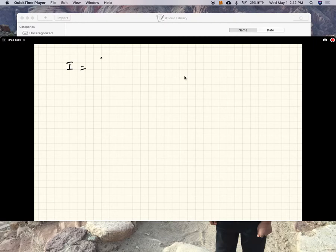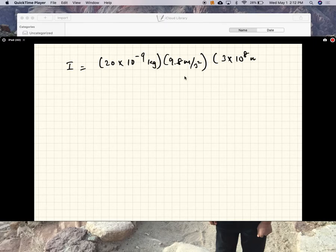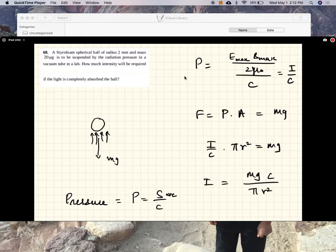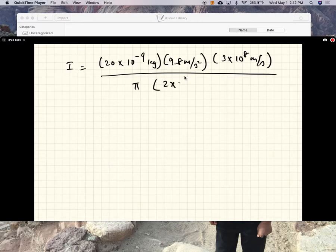20 micrograms, 10 to the minus 6, but you have to convert that to kilograms. So 10 to the minus 9 kg. G is 9.8 meters per second squared. C is 3 times 10 to the 8 meters per second. And pi R squared, pi, the radius is 2 millimeters, 2 times 10 minus 3 squared.